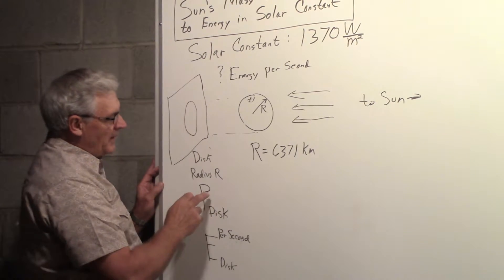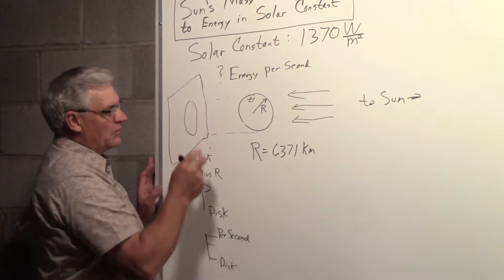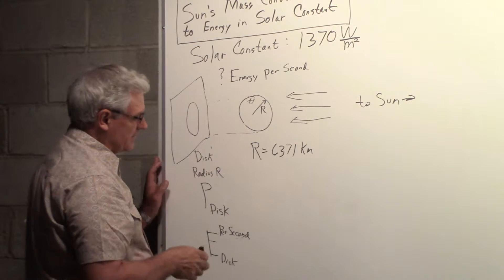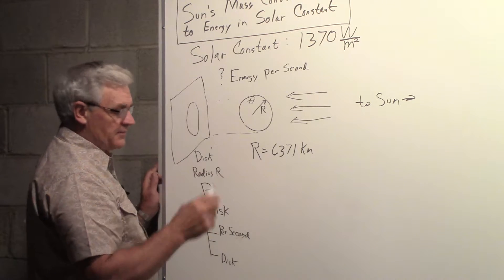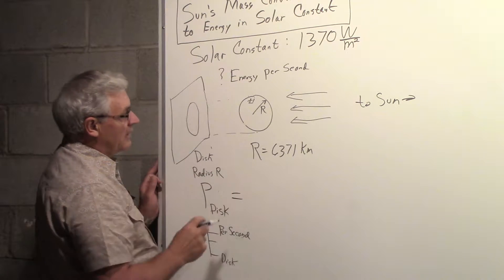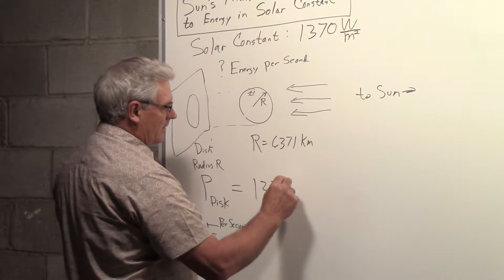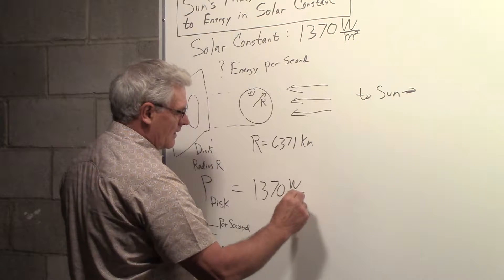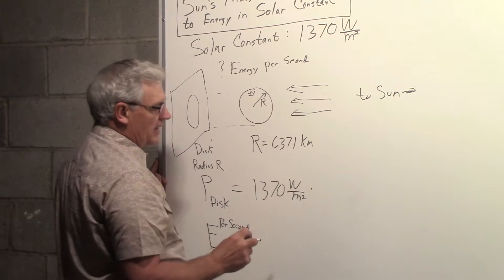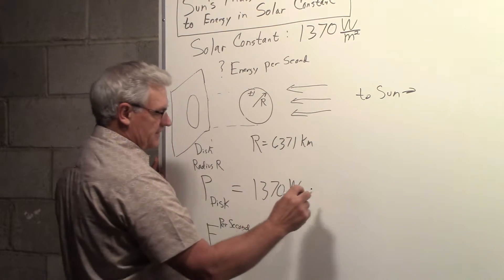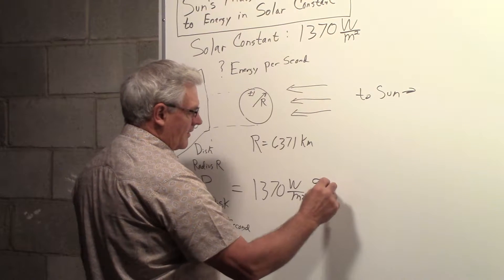So the power that would be falling on that disk, the power from the Sun being intercepted by the Earth, would be the solar constant times the area of the disk, pi r squared.